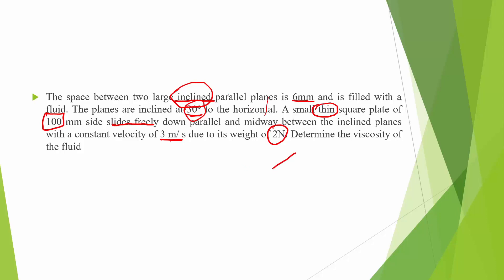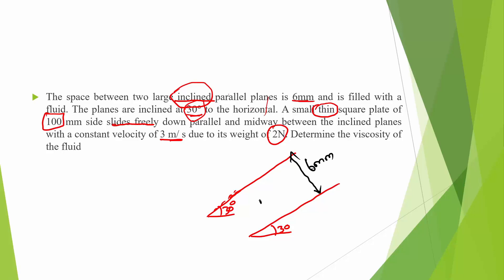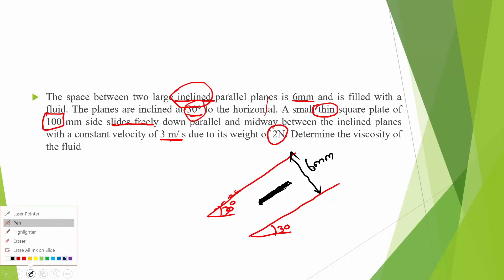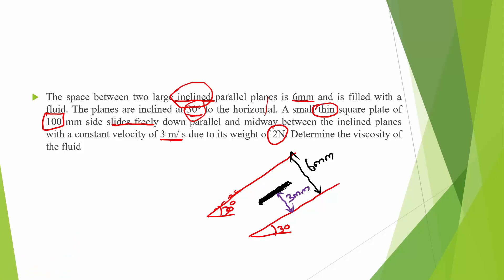The planes are inclined at 30 degrees to the horizontal. The distance between the two plates is 6mm. Since the plate is thin, we won't consider its thickness, and the plate is at the center. So we divide 6mm by 2, giving 3mm on each side of the plate.